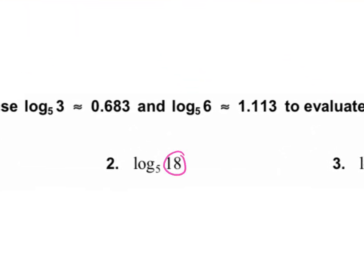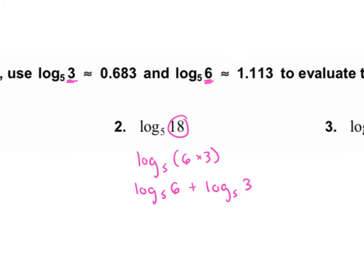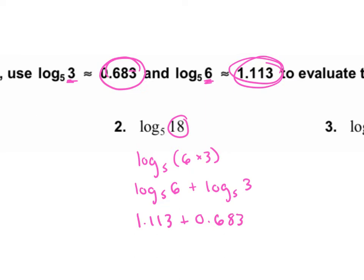Number 2 is a good one. We want to make 18 look like 3 or 6 or both of them. So how can we use 3 and 6 to give us 18? Log base 5 of 6 times 3. That's 18. How can we expand this into two different logs? Add them. So log base 5 of 6 plus log base 5 of 3. Then plug in these numbers: log base 5 of 6 is 1.113 and log base 5 of 3 is 0.683. We just plug those in and add them — that gives us 1.796.